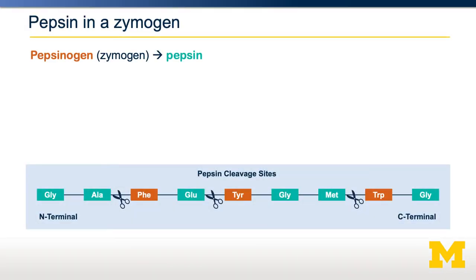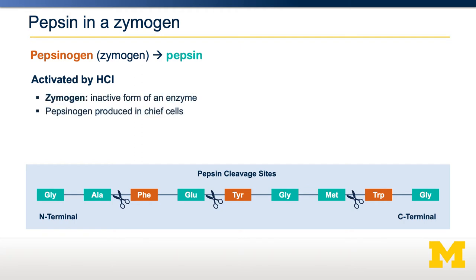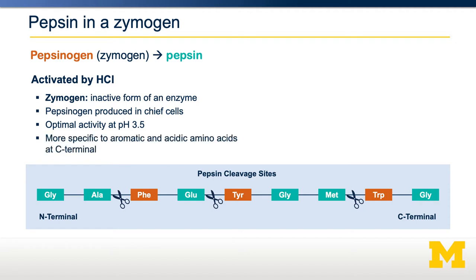Most proteases are generated in what's called a zymogen. Let's take pepsin and pepsinogen as an example. Pepsinogen is the inactive form. However, once activated by HCl, a particular peptide bond is broken and pepsin is the product. Pepsin, the shorter form of pepsinogen, is now highly active, especially in the acidic environment of the stomach. It is specific to aromatic amino acids and it can start the digestion of protein in the stomach.